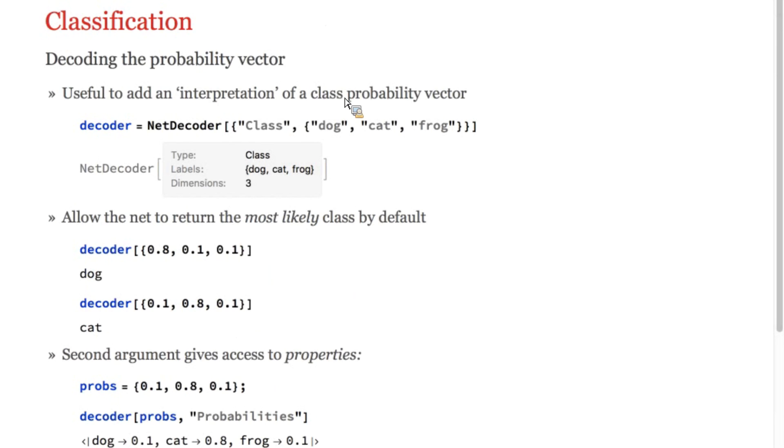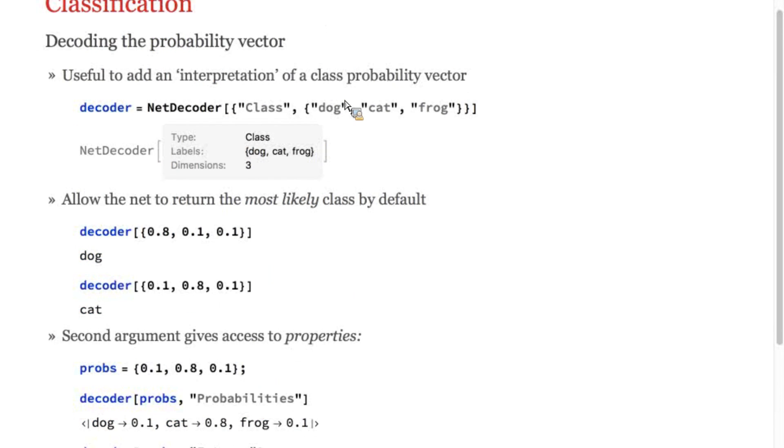Once your net has produced a probability vector, it's useful to use a net decoder to interpret those probabilities. Here's a decoder that interprets a vector of length three as the probabilities of the classes dog, cat, and frog. Decoders can be attached to the output of a net and, by default, give the most likely class.